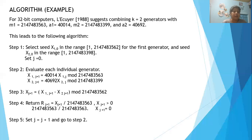Step 4 is to return the generator value X_j+1. If the value of j equals 0, we compute 2147483563 divided by 2147483563, or else,